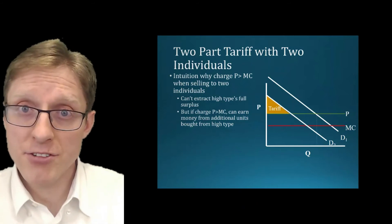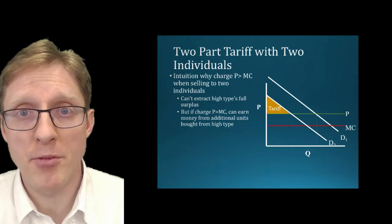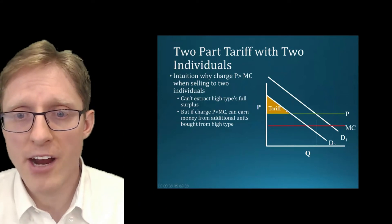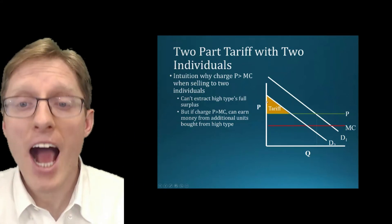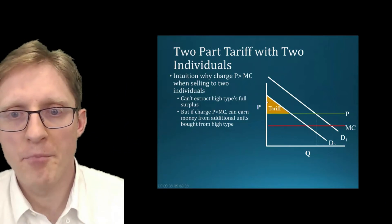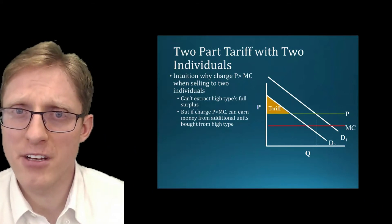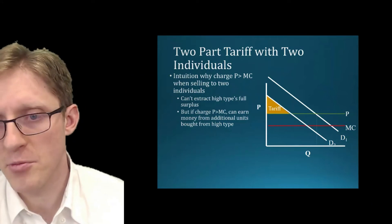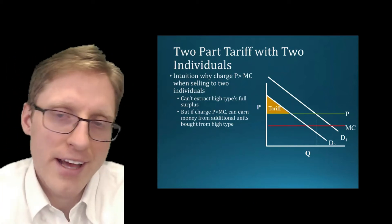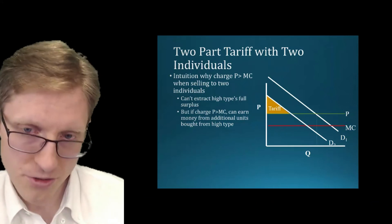The tariff is going to have to equal the consumer surplus for the person with lower valuation. The tariff shown here is equal to the area of this orange shaded region — any higher tariff and you wouldn't sell to the person with lower demand, because they wouldn't be willing to buy. We're going to assume for now that you're trying to sell to both individuals, setting aside the extreme case where you'd rather just sell to the higher-demand individual only.